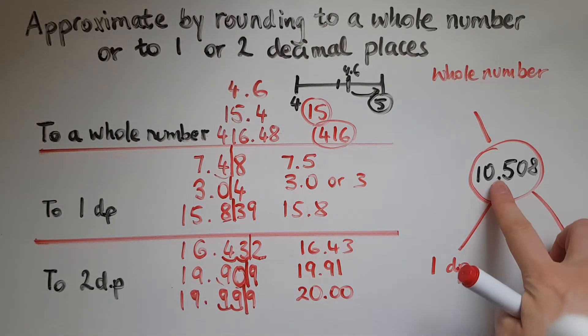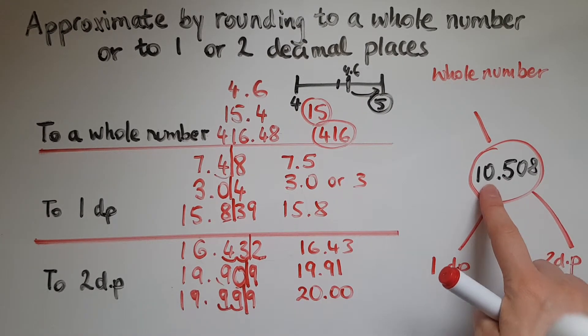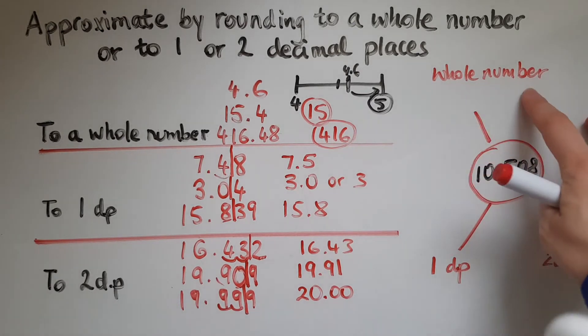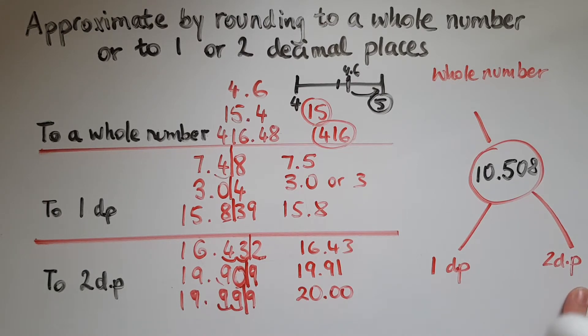So now, a final example, we've got 10.508, which I'll round to the nearest whole number, to one decimal place and two decimal places. So to the nearest whole number,